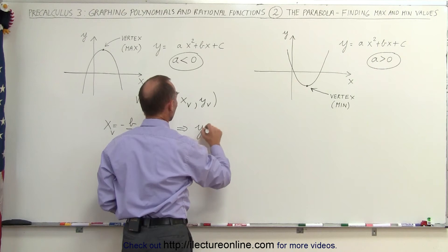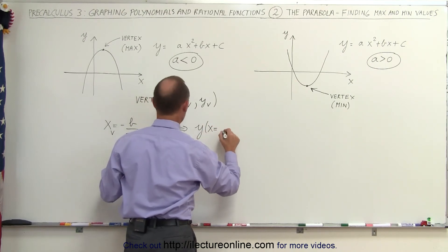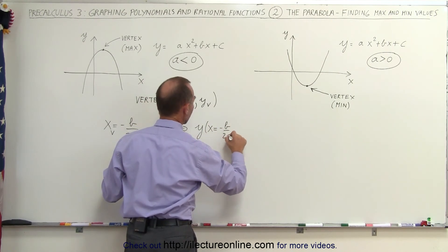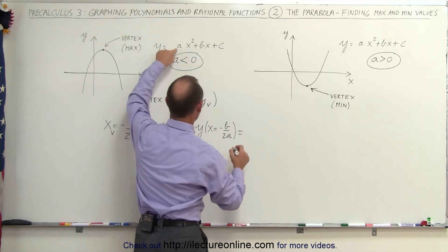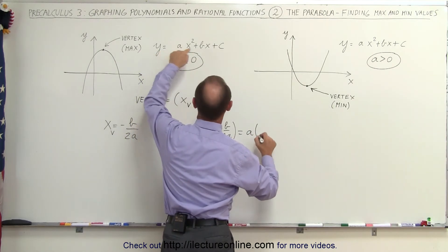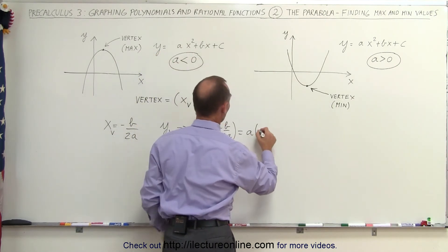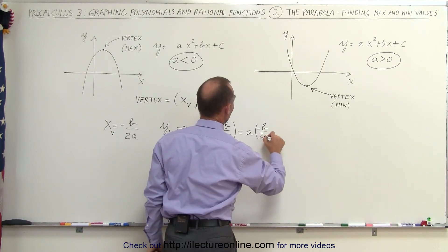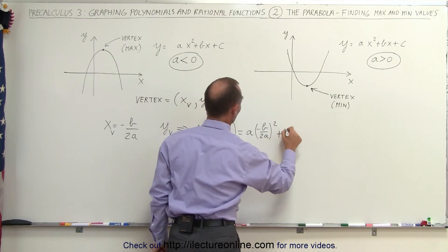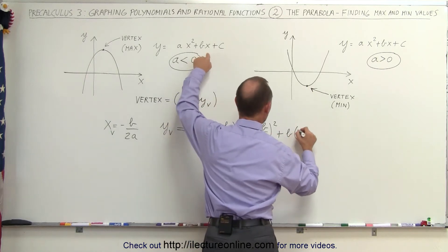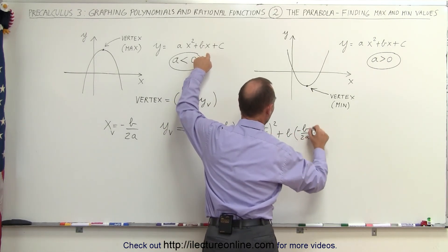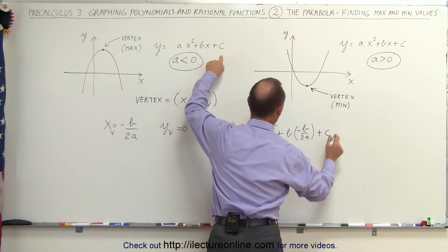So to find it we say y when x is equal to minus b over 2a, and that would then be equal to a times x squared. Now x of course will be minus b over 2a quantity squared, plus b times x, and x would be minus b over 2a, and then we add plus c to that.